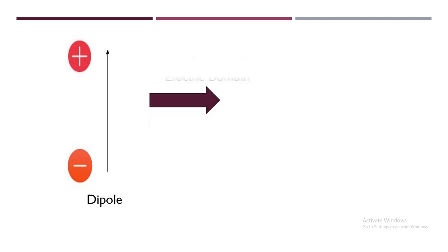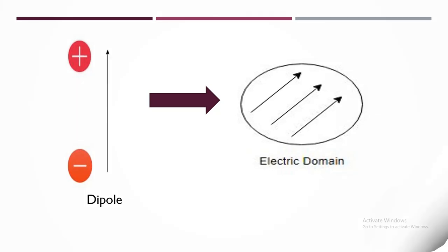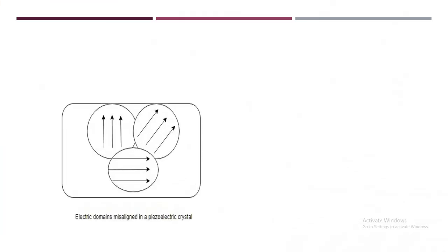Now when you have a lot of these dipoles pointing in one direction, you have what scientists call an electric domain. Now usually in a piezoelectric crystal, you have many of these electric domains misaligned.